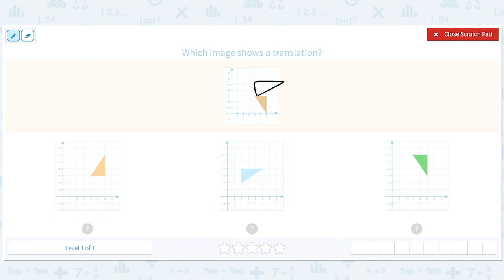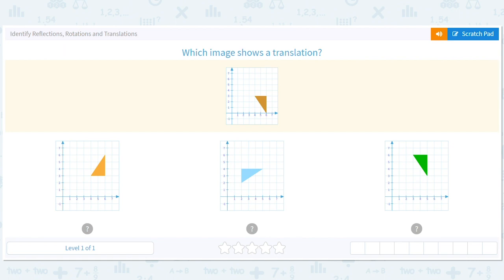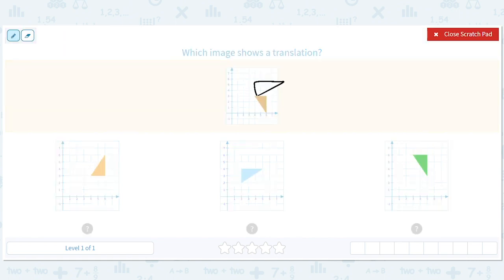Or if I reflected it, I could reflect it across this line. Let me do it a little bit more neatly. This would be a reflection. And a translation just means I move it without changing it.